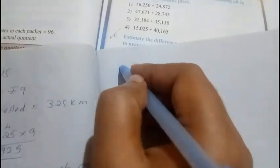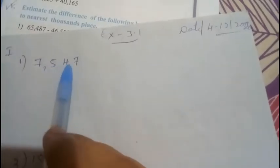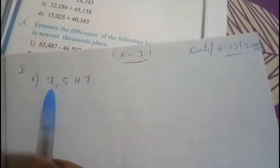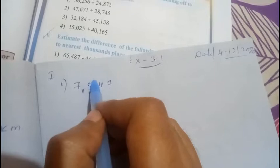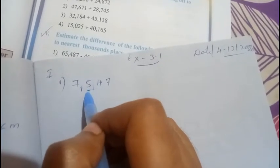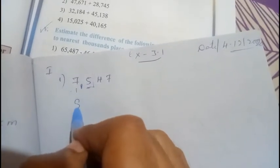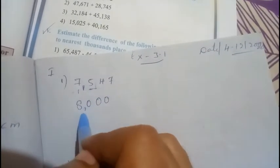Question number one is 7547. This is the units place, tens place, hundreds place, and this is the thousands place. You need to look at the hundreds place digit. If it is five or more than five, you add one to the thousands place — so it becomes 8 — and replace the remaining three digits with zeros. Your answer is 8000.